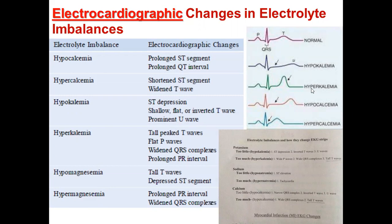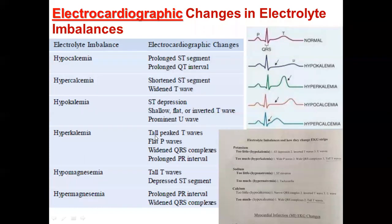The EKG changes in hyperkalemia — too much potassium — include a wide P wave, a wide QRS complex (which is narrow in the normal picture), and a tall T wave, which is taller than normal. To summarize: tall T wave, almost flat or wide P wave, wide QRS complex, and prolonged PR interval.